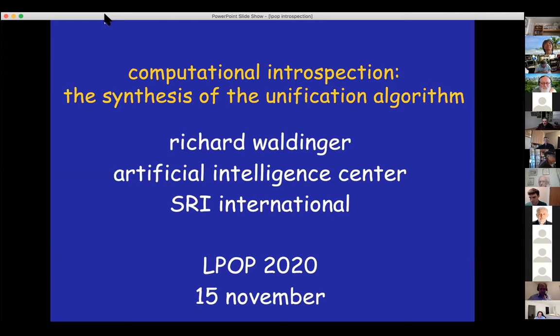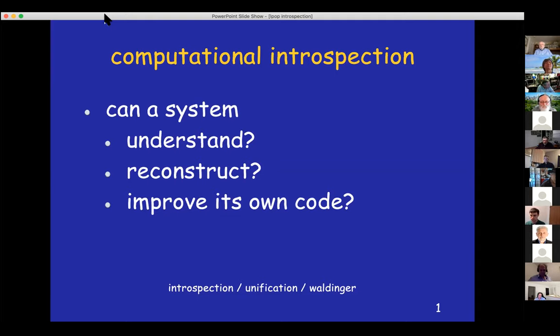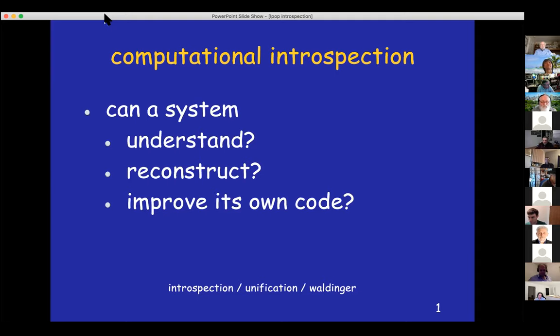Okay, I have included in my talk the term computational introspection. Now, what does that mean? What I mean is, can we have a system which can examine its own component, reconstruct its own components, and possibly even improve its own components? And we're using unification as a test case because we're in a framework of deductive program synthesis in which the program is constructed by a theorem proving task. And unification is a crucial element in the theorem provers that we're envisioning. So, we're asking, can the system look at its own unification algorithm and reconstruct it in possibly a better way? And then we can imagine that a system would be able to improve itself.